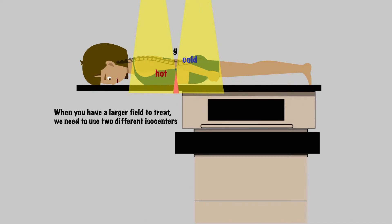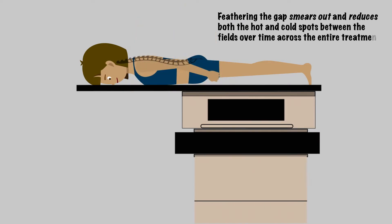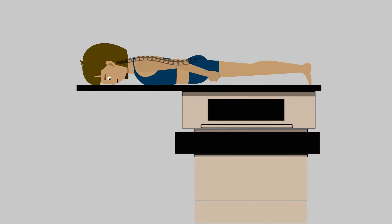We can deal with these hot and cold spots by feathering the gap. Feathering the gap means that you move the junction between the two fields after some number of fractions, which softens or feathers the dose along the field edges. This smears out and reduces both the hot and cold spots between the fields over time across the entire treatment. Now let's give you some numbers and equations here for calculating the gap based on the depth you want to treat.